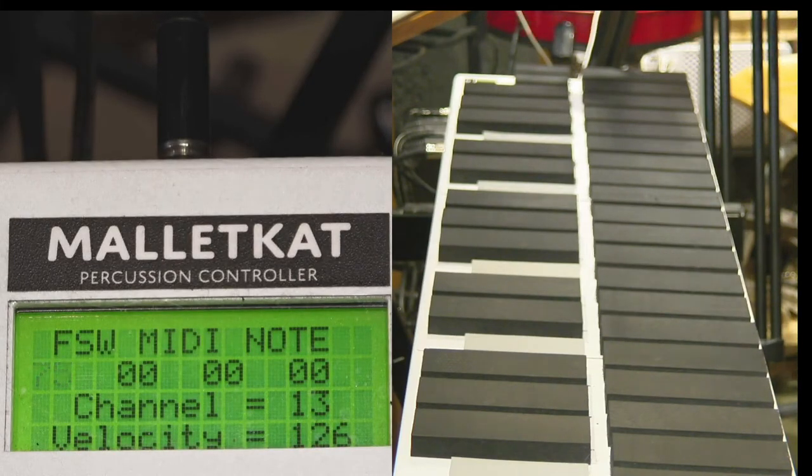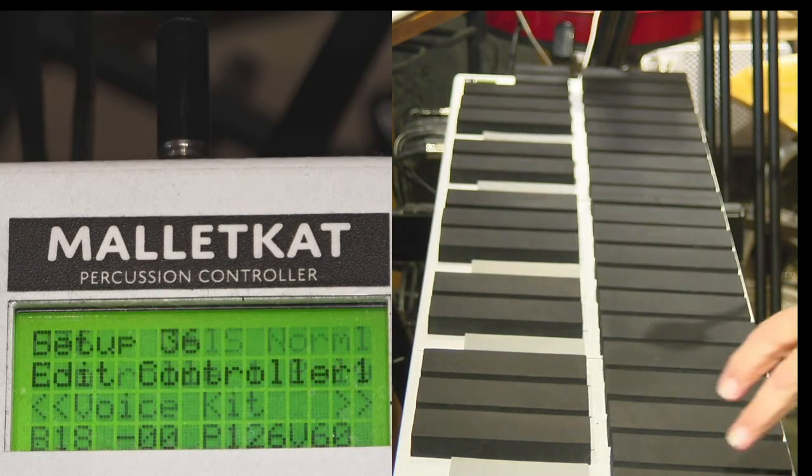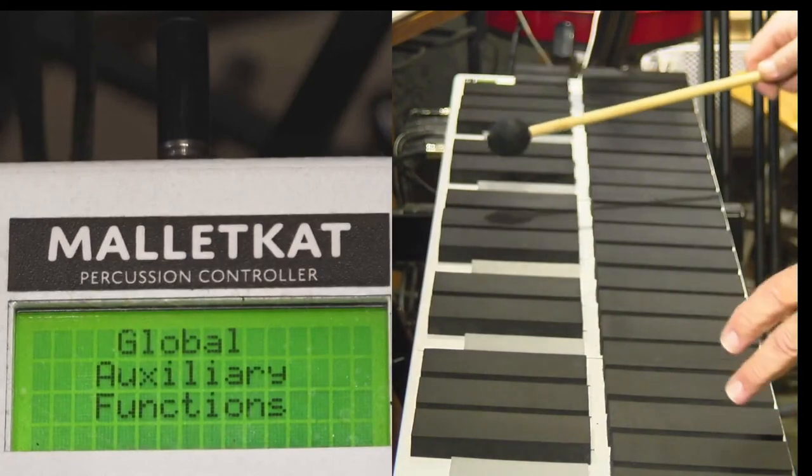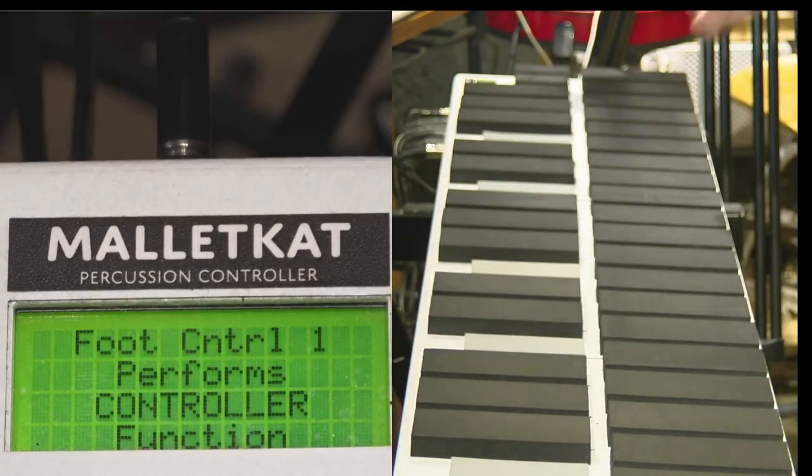For example, that's one MIDI note, 75, the others are all off. They're on channel 13. If I do this, please notice that there's no velocity. It's just always going to produce the velocity that you set here. But again, the main use for the foot controller is to act as a controller.